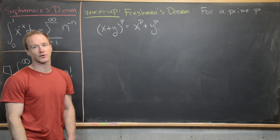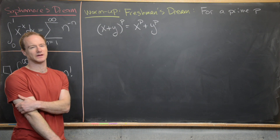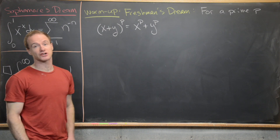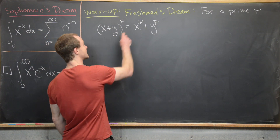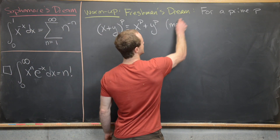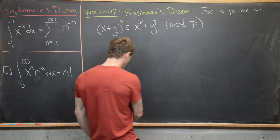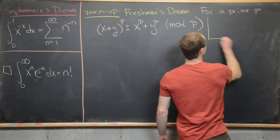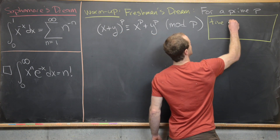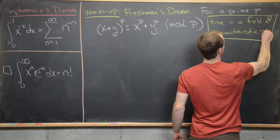For a prime p, the freshman's dream states that x plus y to the p is equal to x to the p plus y to the p. That doesn't seem right — and that's because it isn't true in general. But we can make it true by writing it as a congruence: these are congruent to each other mod p. Or equivalently, the original equation is true in a field of characteristic p.